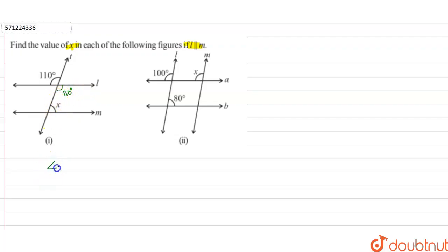Now, if you can observe, angle x plus 110 degrees will be equal to 180 degrees. Reason: angles on the same side of the transversal are supplementary. L is parallel to M and T is the transversal. Therefore, angle x plus 110 degrees equals 180 degrees.